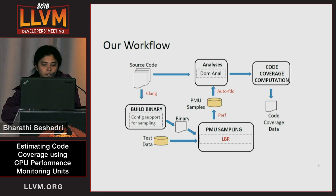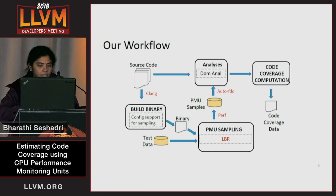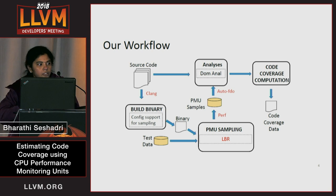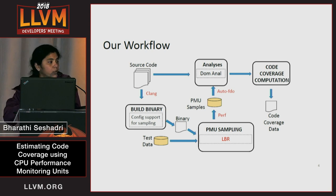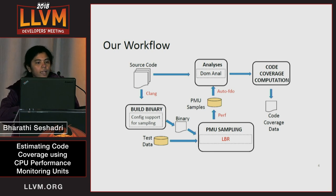Here is our workflow. You build the binary as you would normally do, with any additional support for sampling if required, and you run the tests on the generated binary. The samples are collected using perf and processed using AutoFDO, which helps map the samples to instructions in the control flow graph. If an instruction has an associated sample, it is considered to be covered, and all instructions in the same basic block are also covered. We implemented this analysis in the sample profile pass, and also implemented dominator and post-dominator analysis to identify additional basic blocks beyond what comes from the samples.